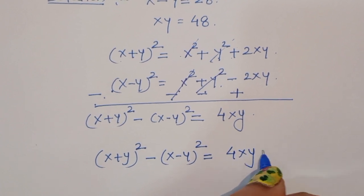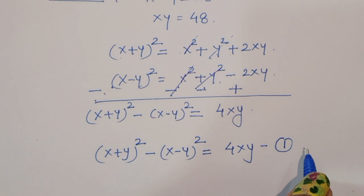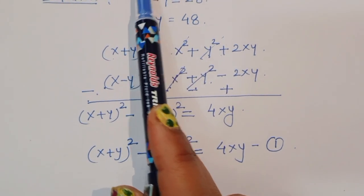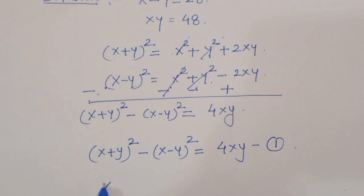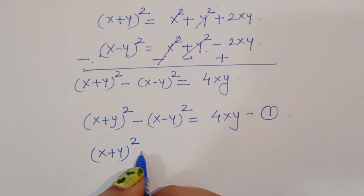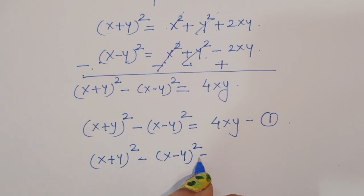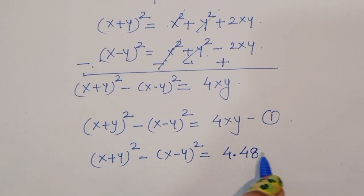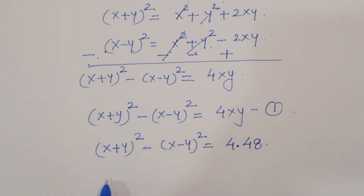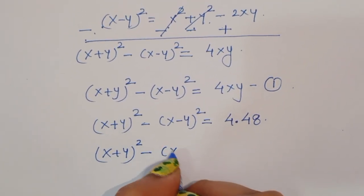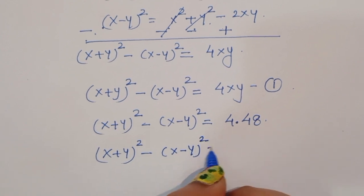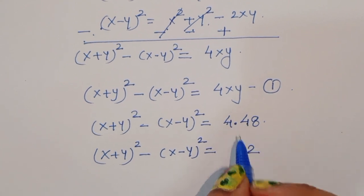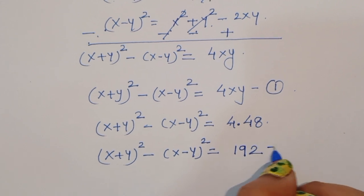So we have derived a new equation: x plus y whole square minus x minus y whole square equals 4xy. This is equation 1. Now the value of xy is already known as 48, so we can write x plus y whole square minus x minus y whole square equals 4 times 48, which equals 192. This is equation 2.